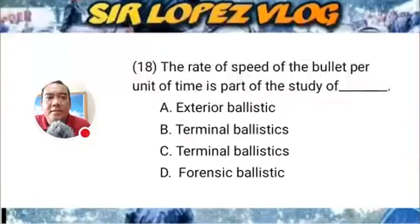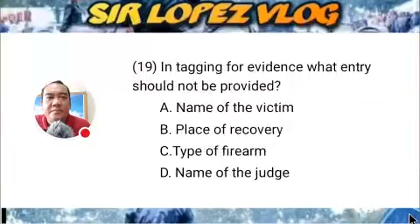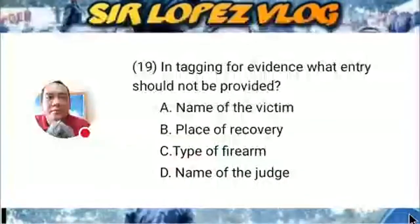Question number nineteen: In tagging for evidence, what entry should NOT be provided? A) name of the victim, B) place of recovery, C) type of firearm, or D) name of the guns?